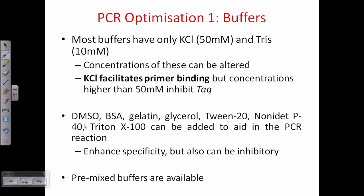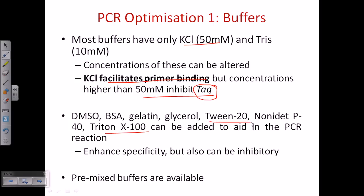For PCR optimization, first consider buffers. Most buffers contain KCl and Tris. KCl facilitates primer binding, but concentrations higher than 50 millimolar can inhibit Taq polymerase activity. Detergents like Tween 20 or Triton X-100 can be added to enhance reaction specificity and ensure proper specific primer binding to the desired sequence.